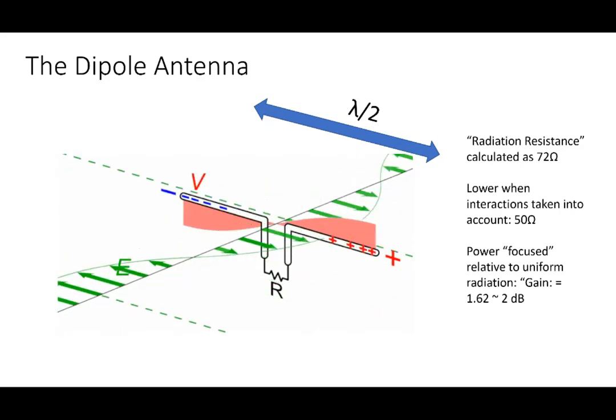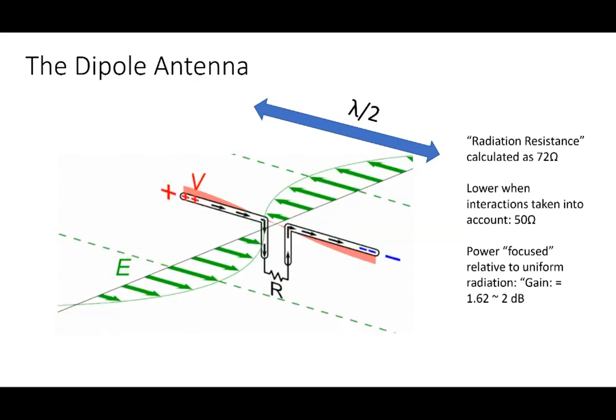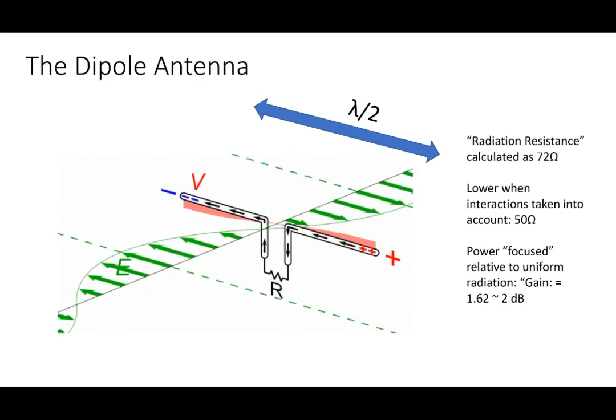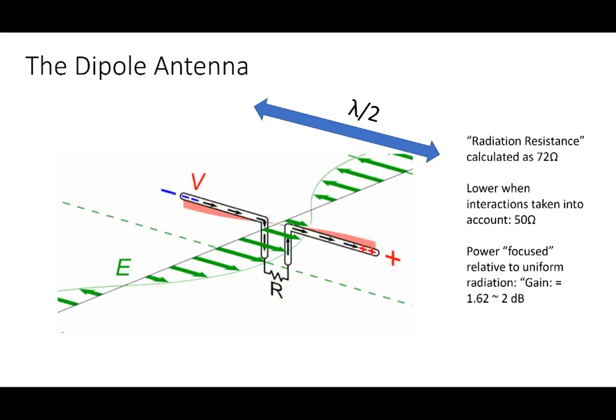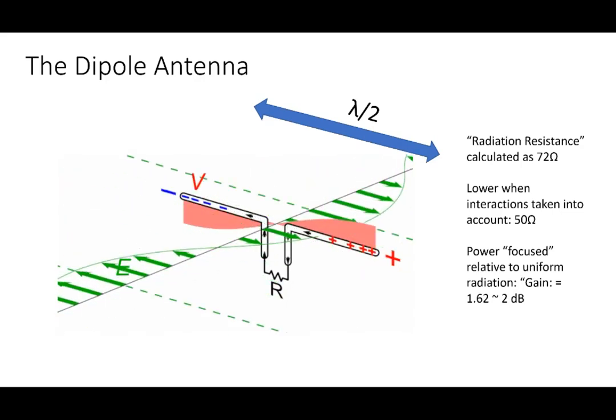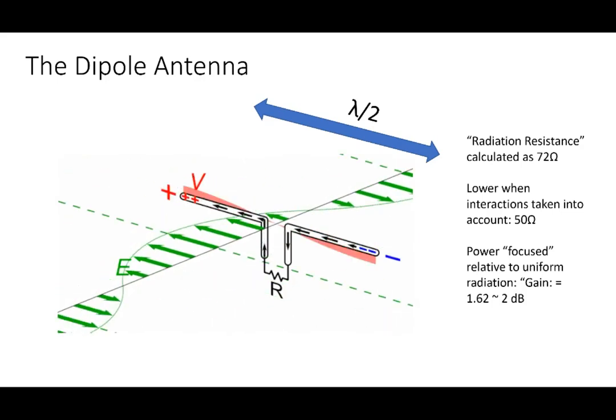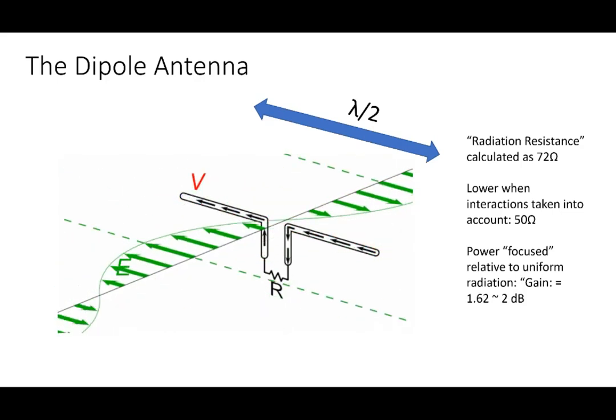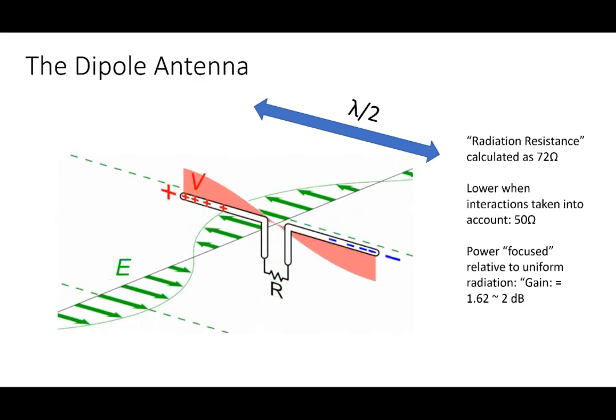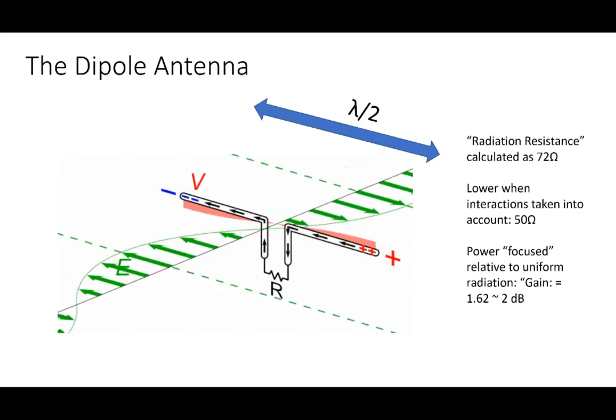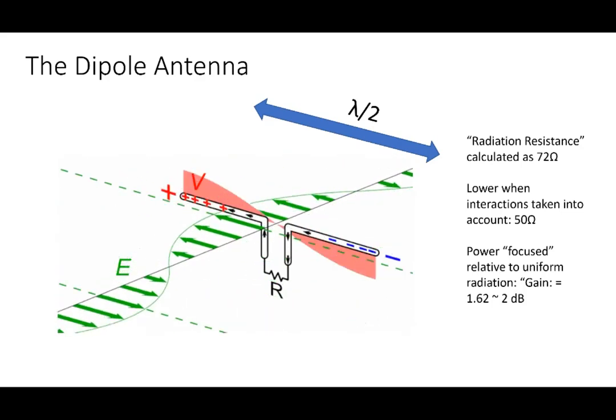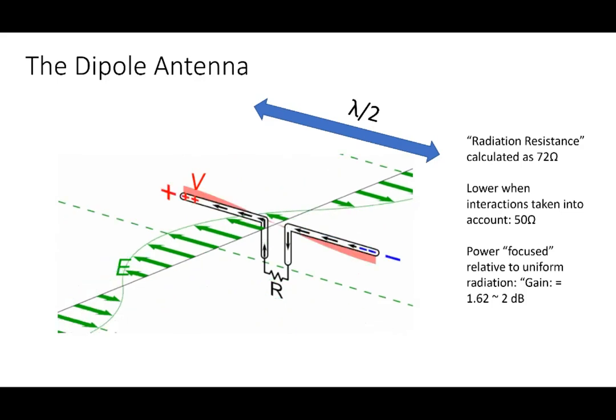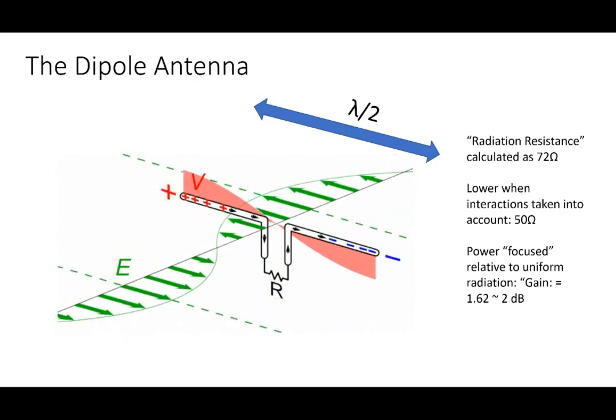So the antenna then is an efficient radiator of energy. How efficient? Well, it turns out that if you calculate the effective resistance of this dipole antenna by working out for a given voltage and frequency at resonance, when the antenna is half a wavelength total length, you calculate the radiated power. And then from the voltage and the power derive a resistance. It comes out to be about 72 ohms. Now for real antennas, it's less than this because there's coupling to lossy things like the ground. And so 50 ohms is actually a very common likely resistance for a dipole antenna.